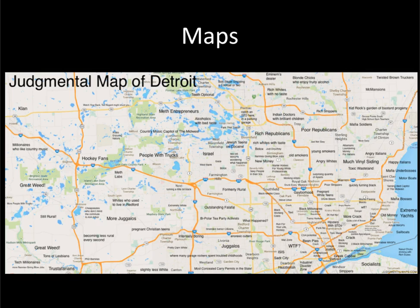What is a map? How is it that maps are not just physical guides, but also ideological ones? This judgmental map of Detroit, taken from the internet, uses labels to mark various places in the city and suburbs. The intent is humorous, but there's plenty of stereotyping going on here.